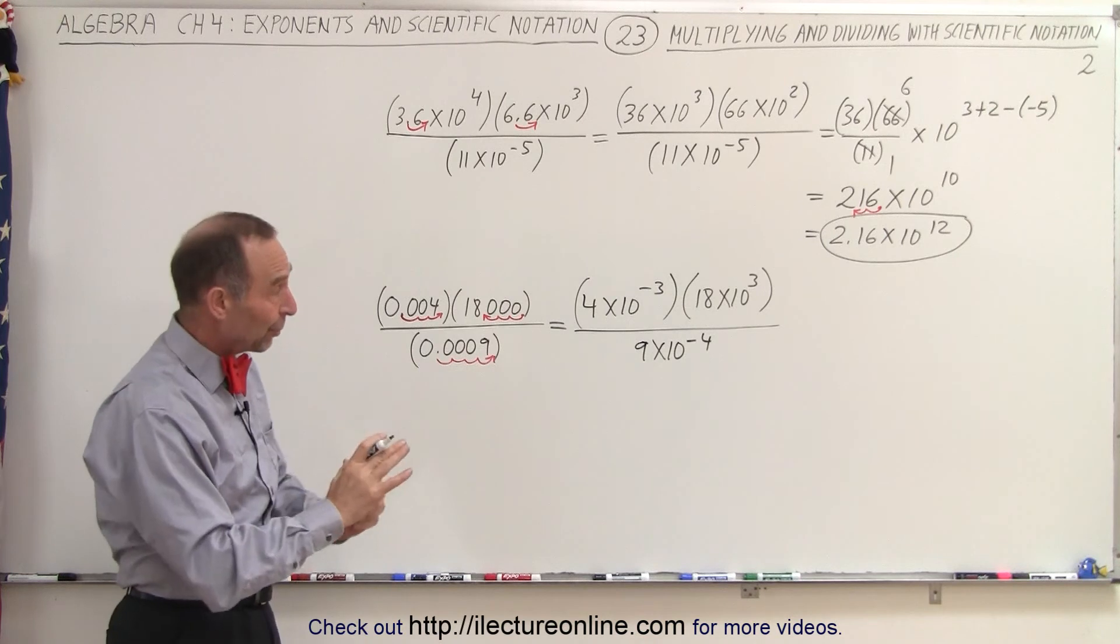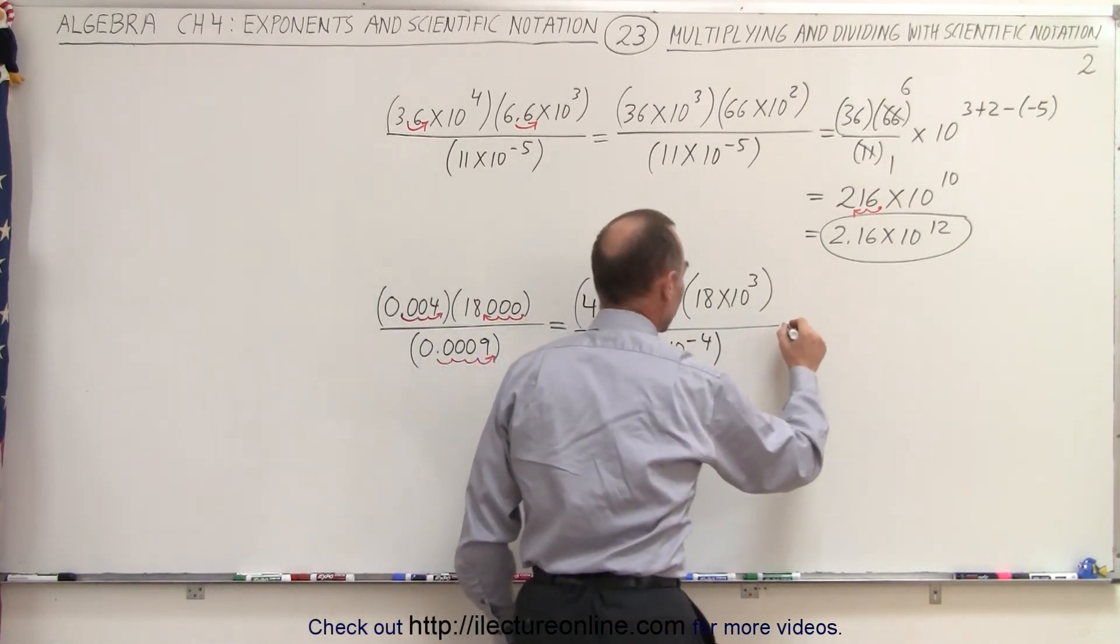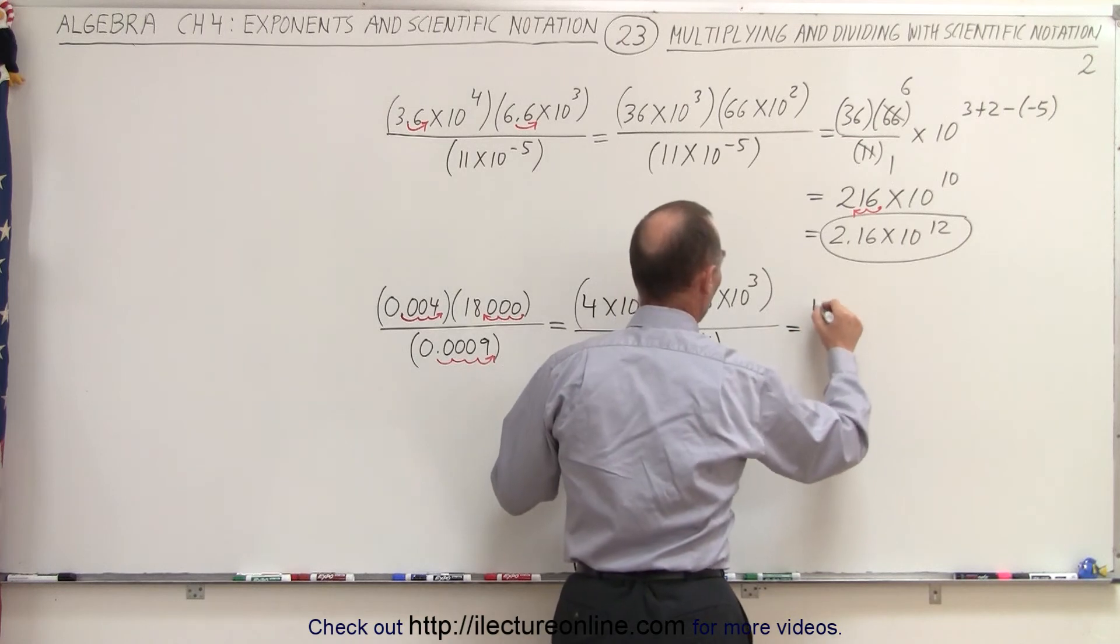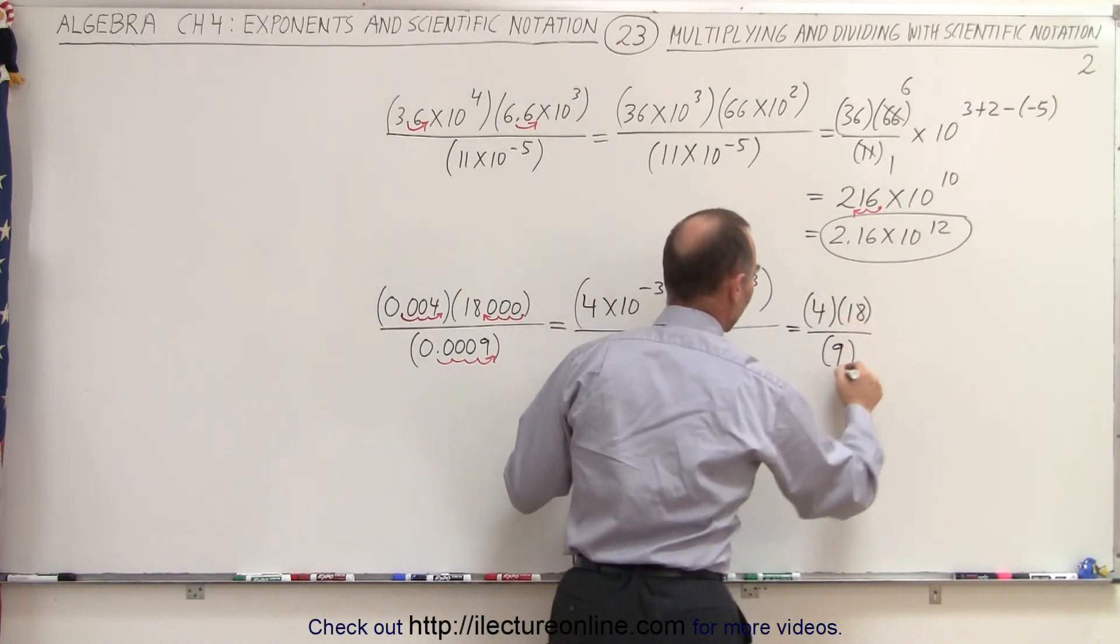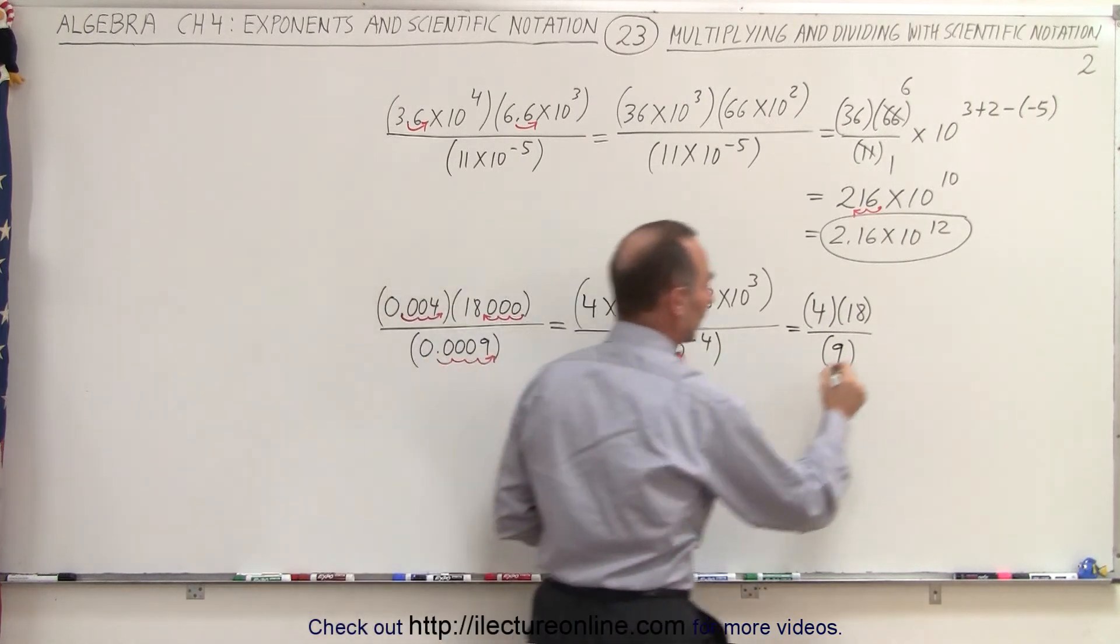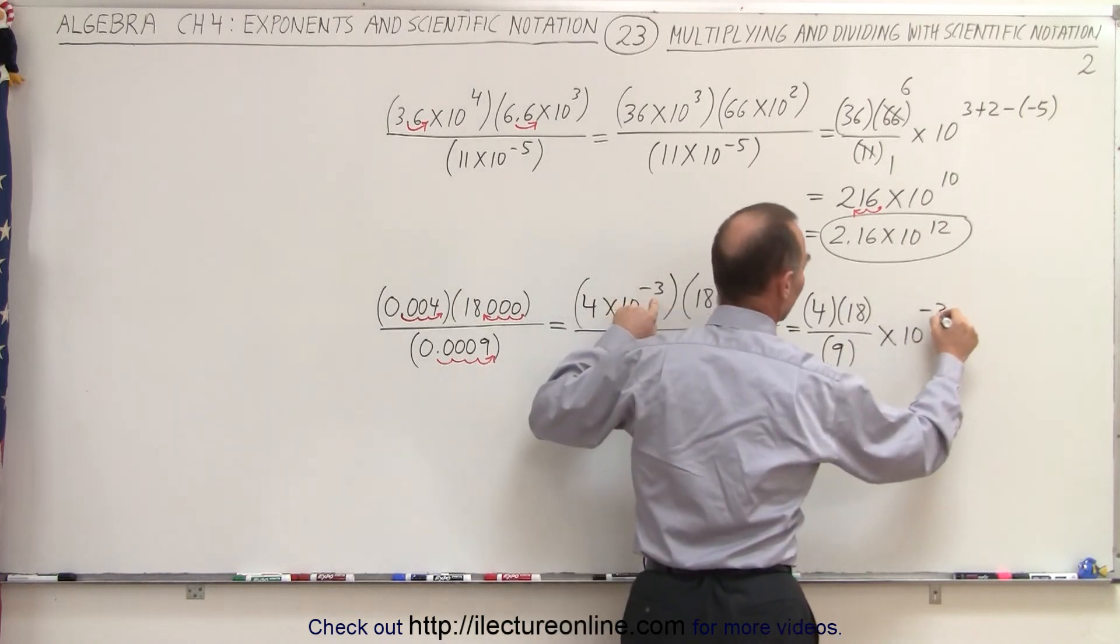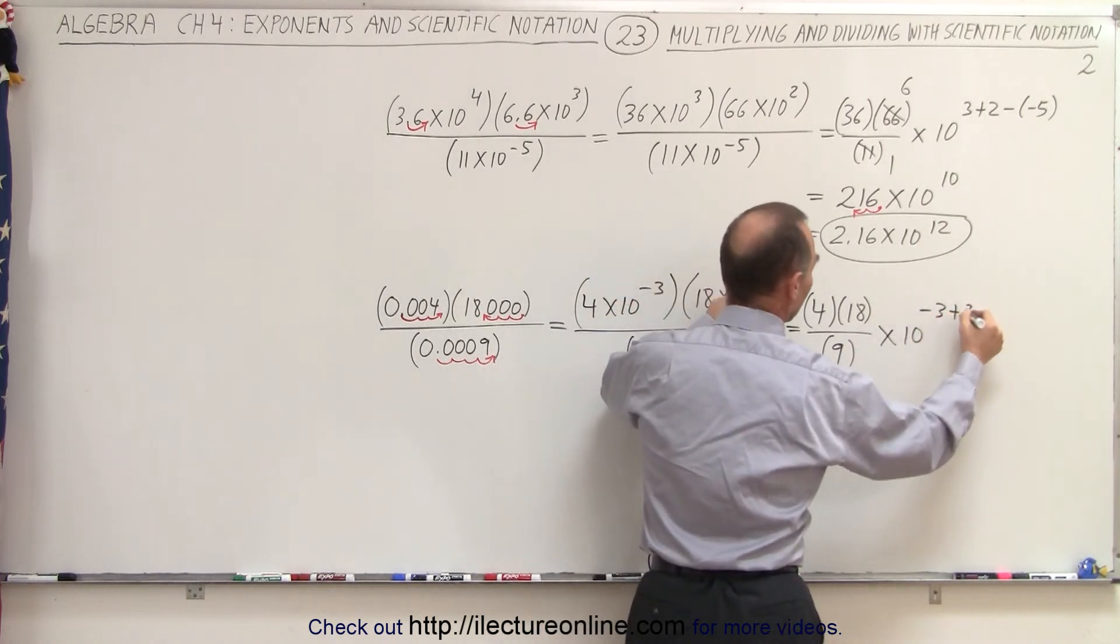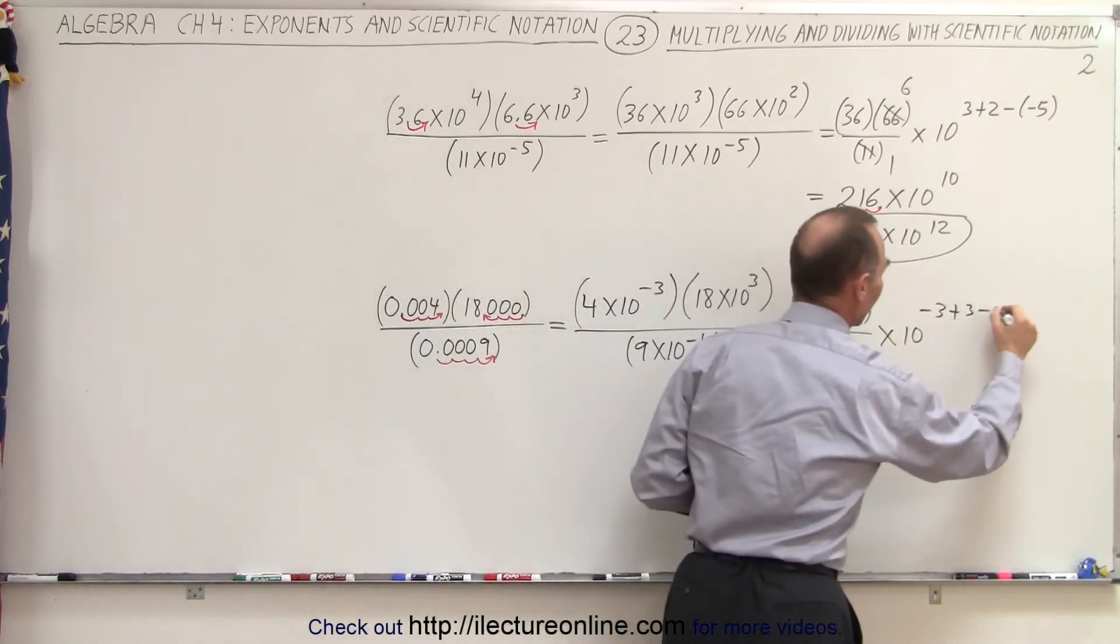Now when we separate the factors from the portions that have the 10 and the exponents, we end up with 4 times 18 divided by 9. So those are the three factors. And then we multiply that times 10. We add exponents. We have a minus 3, we add plus 3, and then we subtract, because it's the denominator, a minus 4.